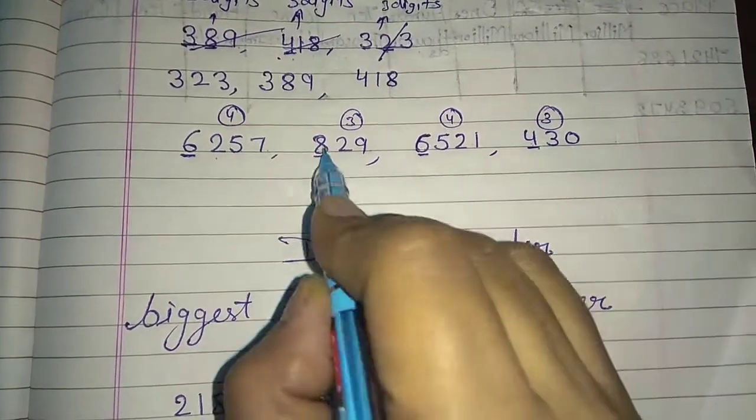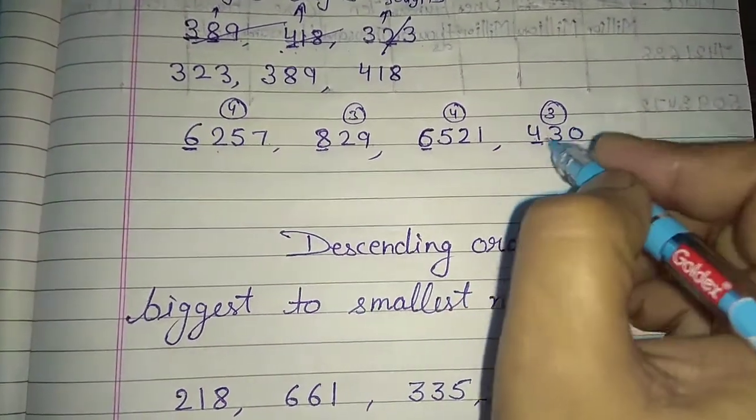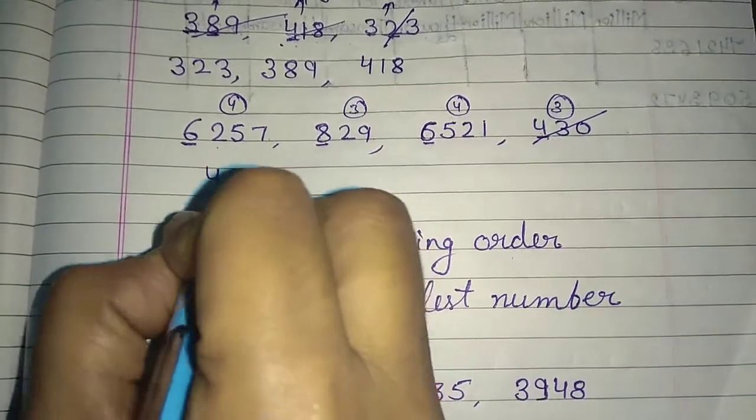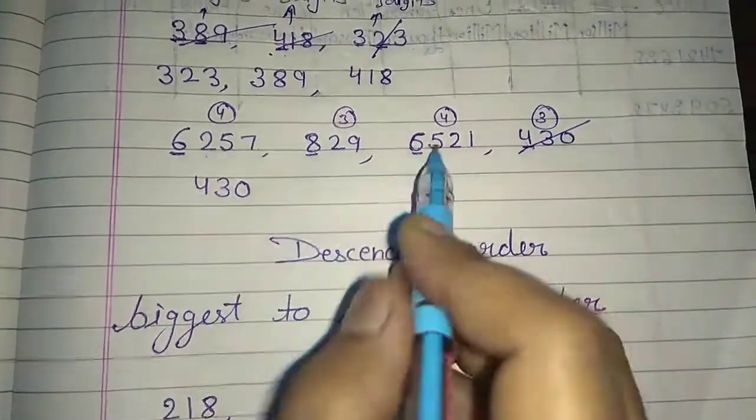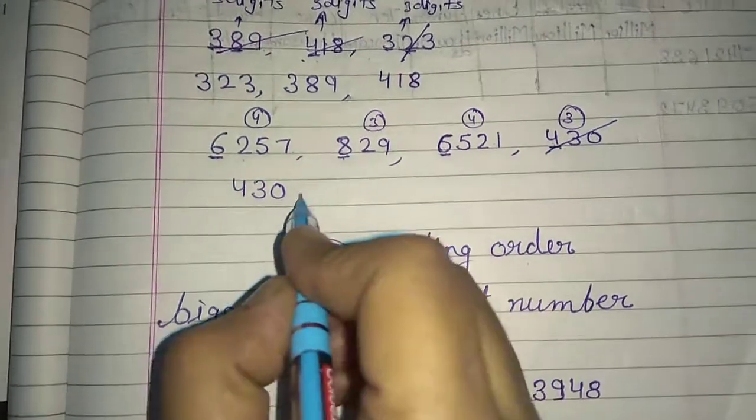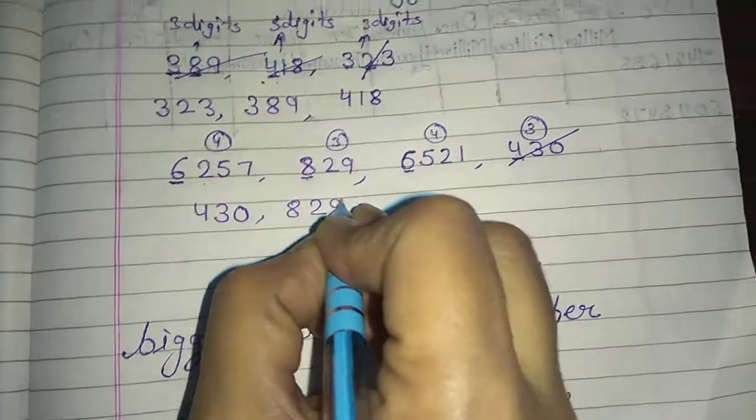So in the 100, we have 4 and 8. So 4 is the smallest number. So what is the smallest number? 430. Now this is our 1000, this is 100. So obviously, what is it? 100 is small. So what is it? 829.